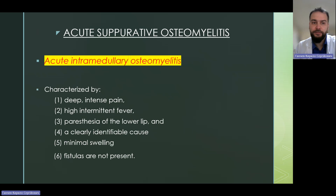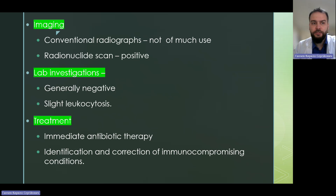Acute suppurative osteomyelitis, also called acute intramedullary osteomyelitis, is characterized by deep intense pain, high intermittent fever, paresthesia of the lower lip, a clearly identifiable cause, minimal swelling, and fistulas are not present. On imaging, conventional radiography shows almost no changes. Radionuclide scan could be positive. Lab investigation is generally negative with slight leukocytosis. Treatment includes immediate antibiotic therapy and identification and correction of immunocompromising conditions.